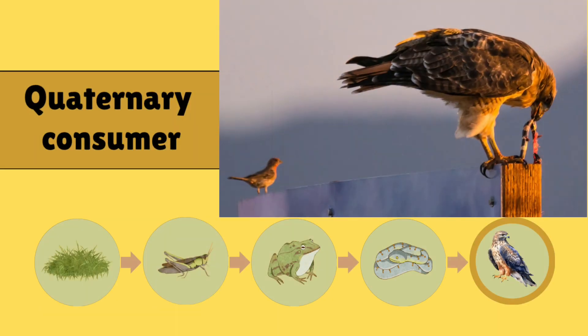Coming to the quaternary consumer. The animal at the top of the food chain is an apex predator — it is not eaten by any other animal. In the picture, we see a hawk. Hawk is the quaternary consumer, and its prey is the snake. Hawk eats snake.